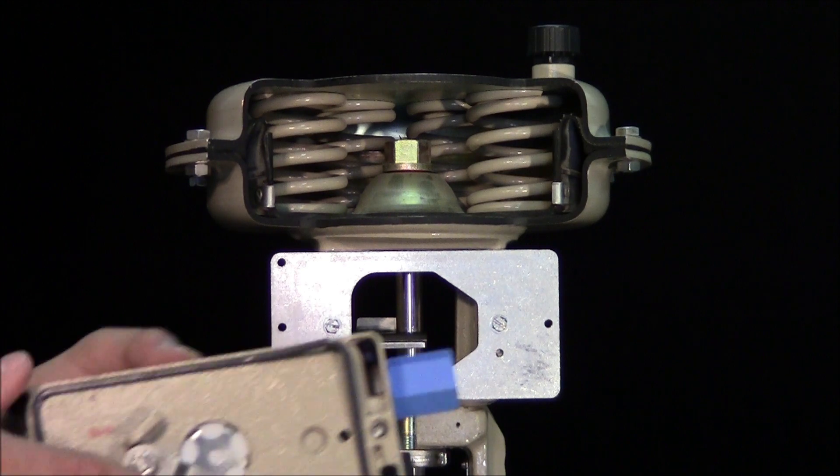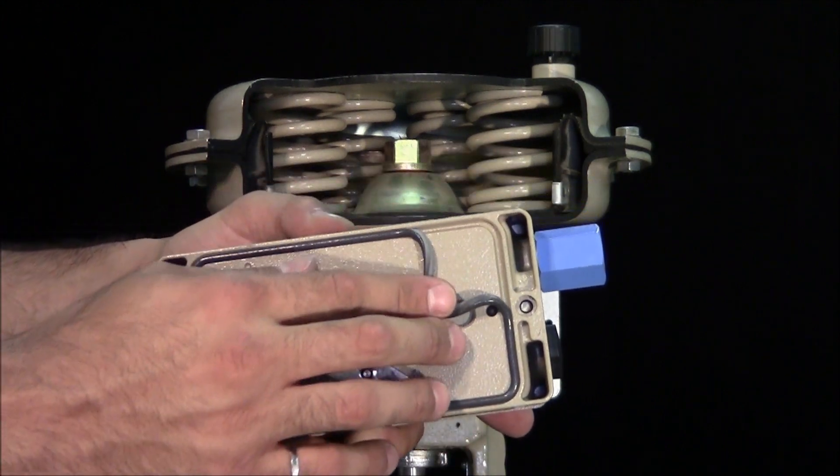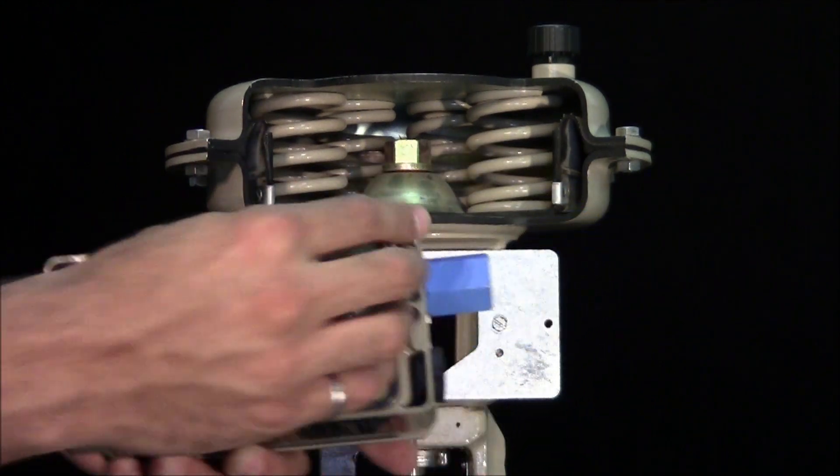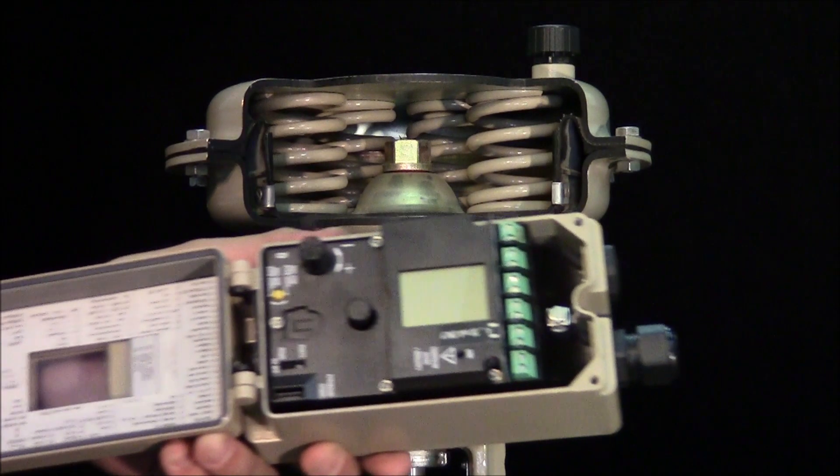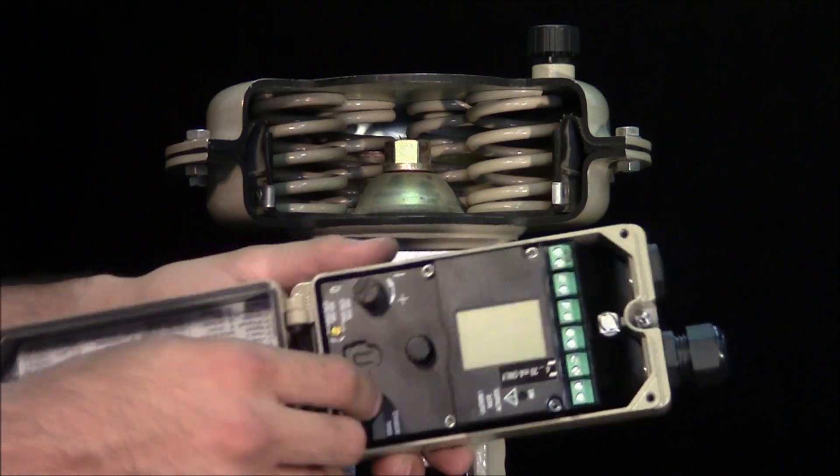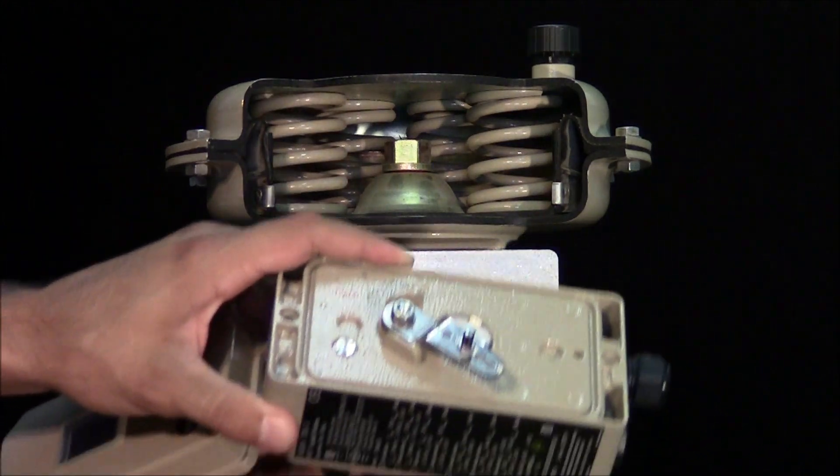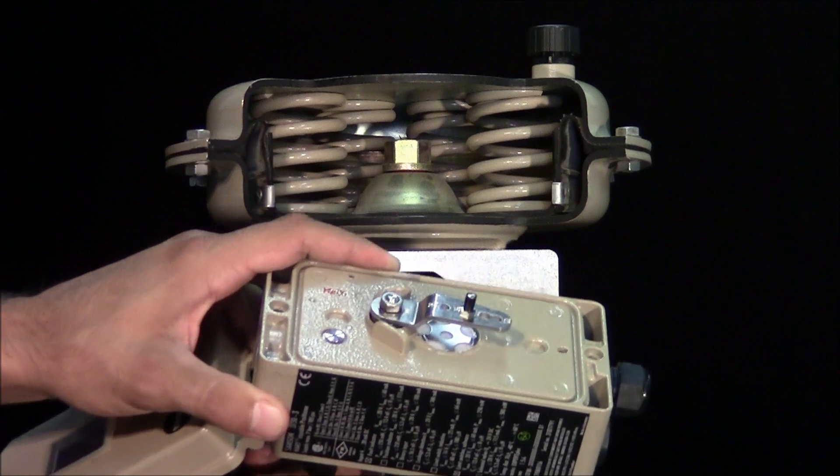Fully insert the gasket into the grooved area of the positioner casing. The knob located on the front of the positioner is attached to the linkage. This can be used to assist in installing the positioner.